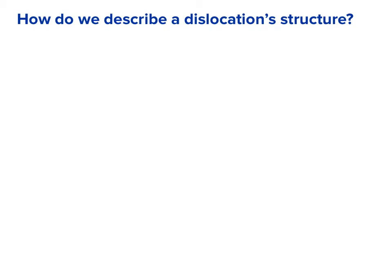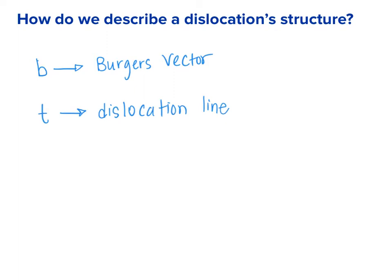As we think about a dislocation's structure, we're going to think about three different features. The first is the Burgers vector, which represents the closure failure when you do a Burgers circuit and tells us about the direction and magnitude by which atoms are displaced due to the dislocation. The second is the dislocation line — a linear defect that separates displaced material from non-displaced material. The third is the slip plane, described by the slip plane normal.